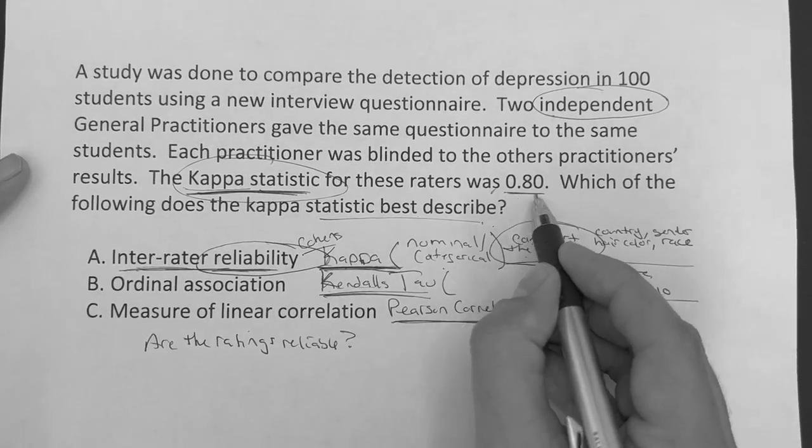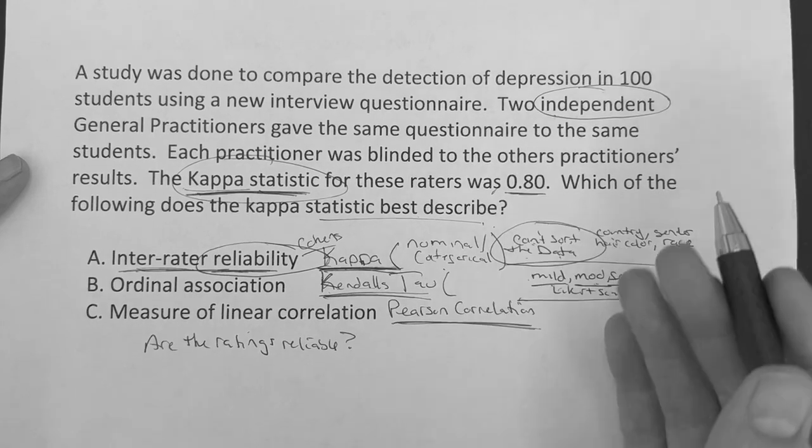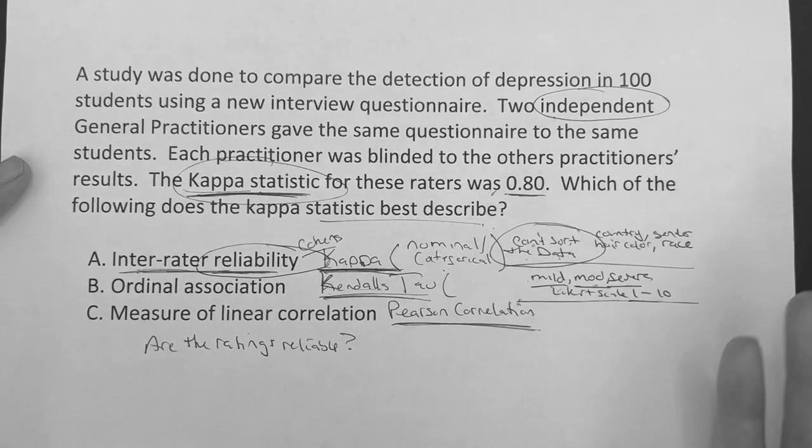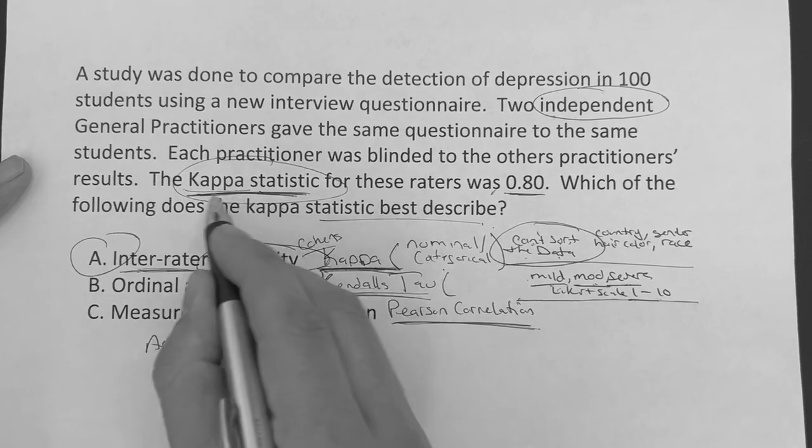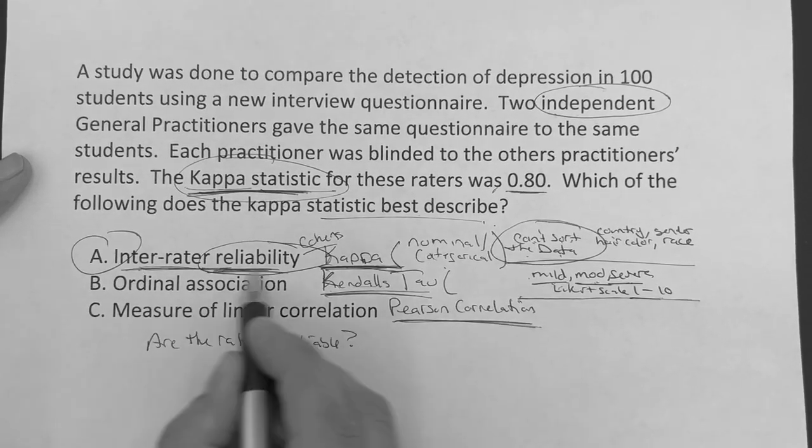And the closer you get to one, 1.0, then it's, there's a high correlation. So 0.8 and above, yes, high correlation. So the answer to this question is kappa statistic test, the inter-rater reliability.